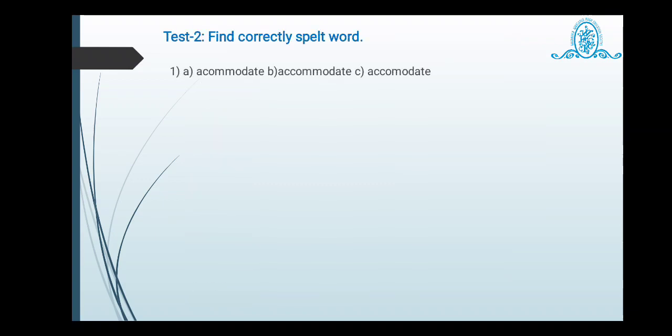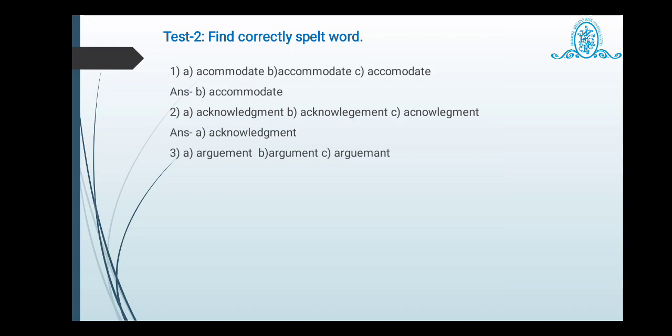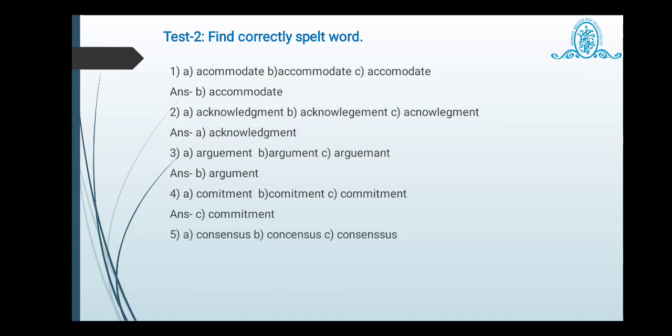Let us, we will find correctly spelled word. Accommodate. So the appropriate spelling is here, double M-O-D-A-T-E. A-double C-O-double M-O-D-A-T-E. Next is your acknowledgement. Acknowledgement always contains D-G. Yes. So acknowledgement. Argument. Just earlier we have seen this. Argument, absence of E. Argument. Commitment. Double M. Yes. We have to use double M for the first and then M-E-N-T. Consensus. That is consensus. Consensus.